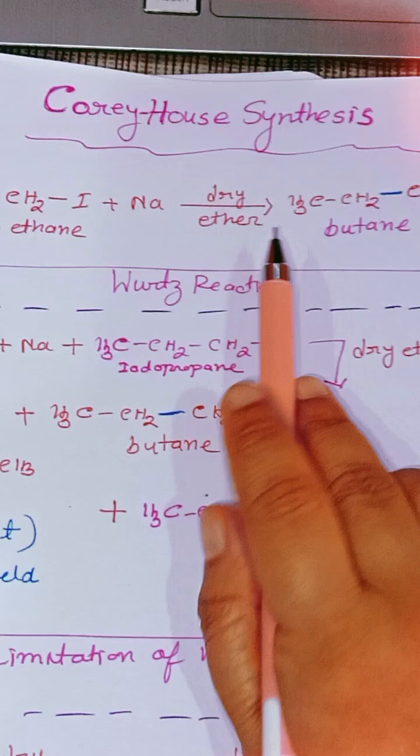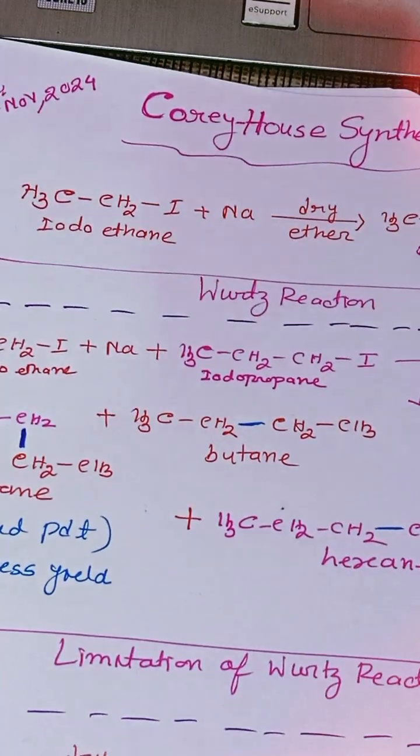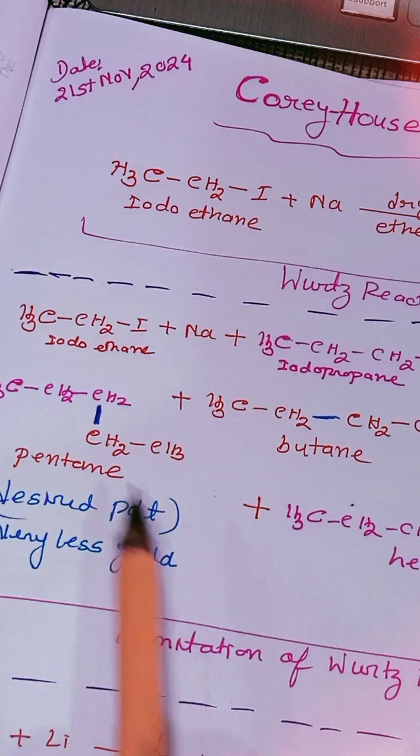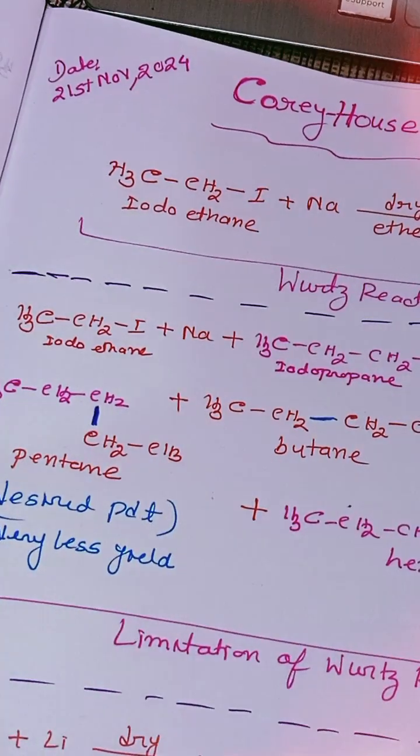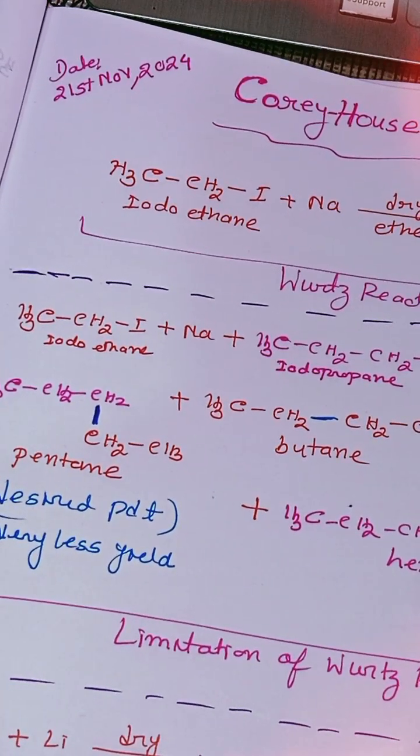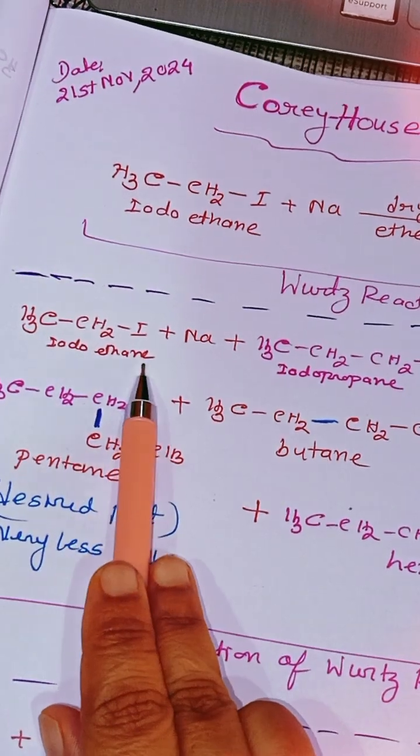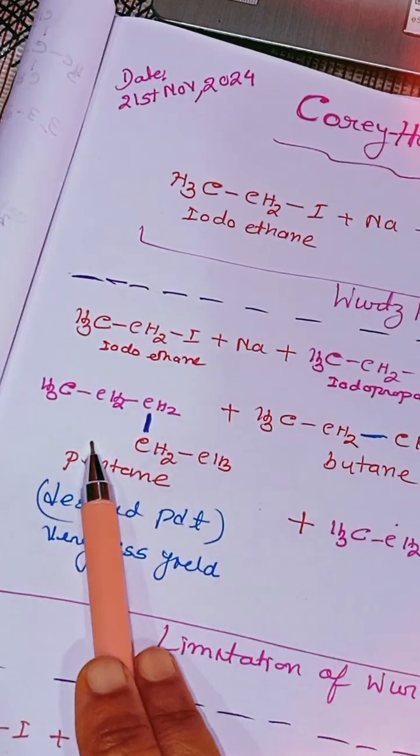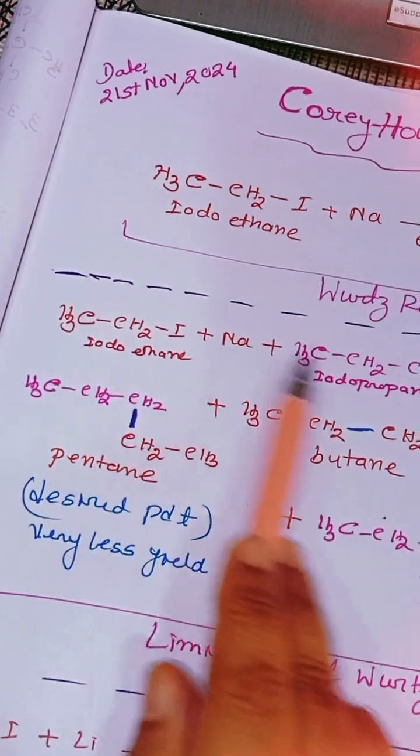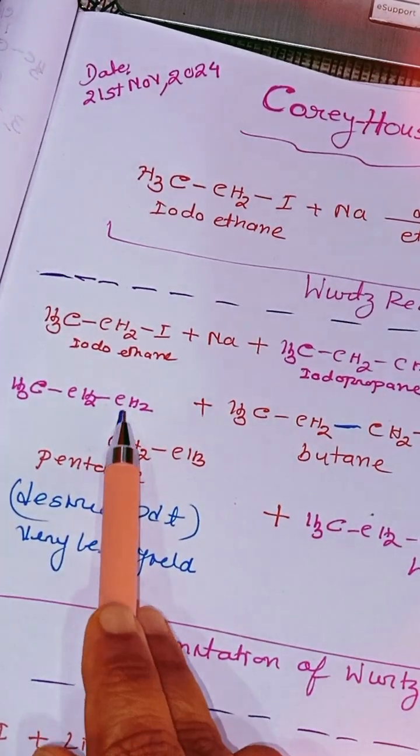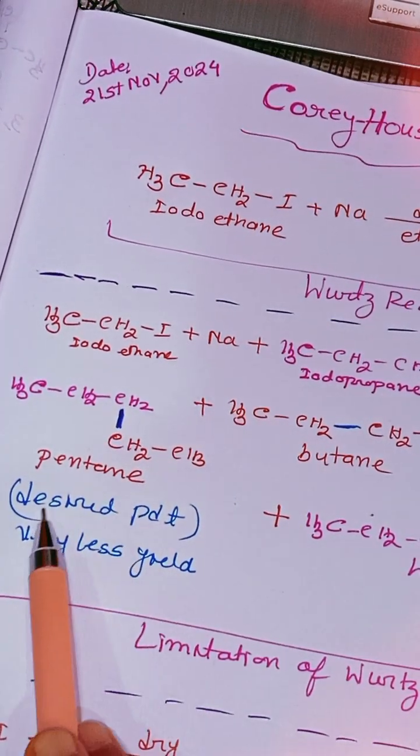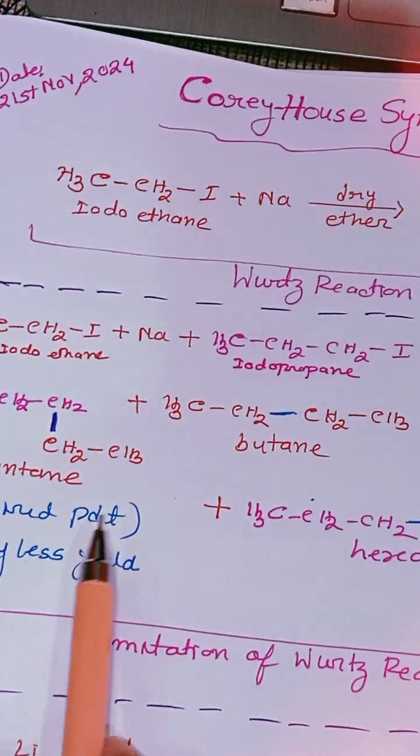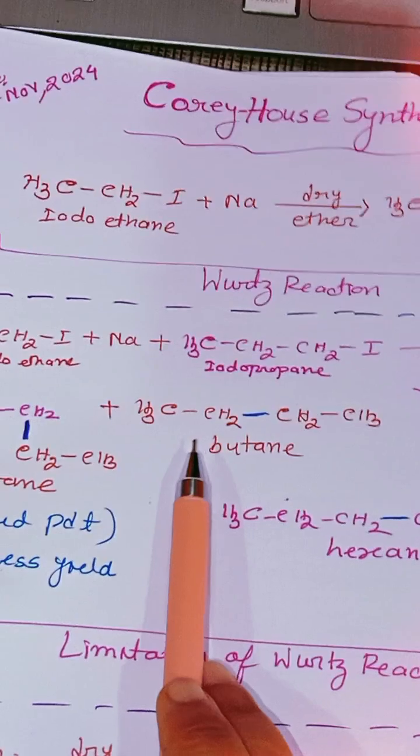This reaction is applicable only for symmetrical alkyl halides. But when we use unsymmetrical alkyl halides, two different kinds like iodoethane and iodopropane, our desired product should be ethyl and propyl groups combined to give pentane. But actually the desired product forms in very less quantity.